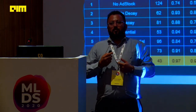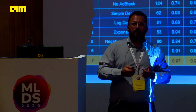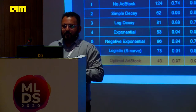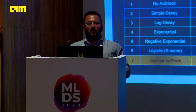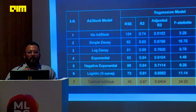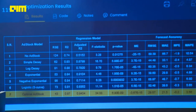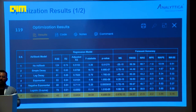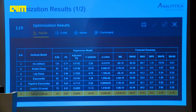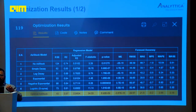As we run our solution for all these different parameter types — for the decay factor as well as the type of transformation — we started with a very simple model with no ad stock, applied no transformations to marketing channels and let the model run. Then we introduced different types of transformations: simple decay, log decay, exponential, negative exponential, and logistic — where logistic is an S-curve. Based on these six transformations, we got an optimal ad stock model with minimized RMSE and minimized MAPE.